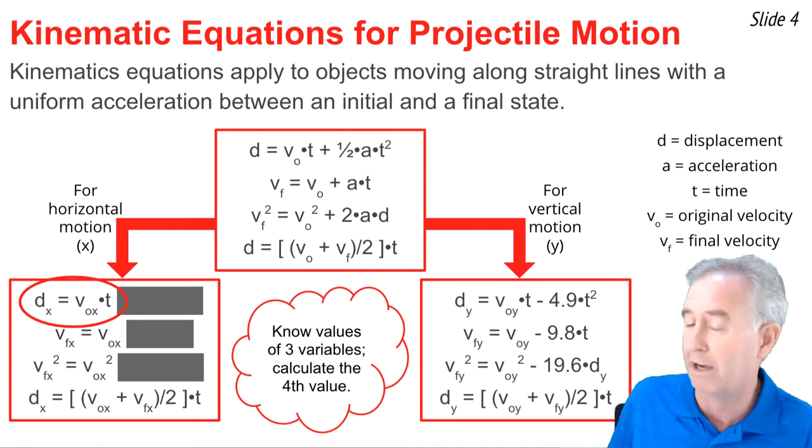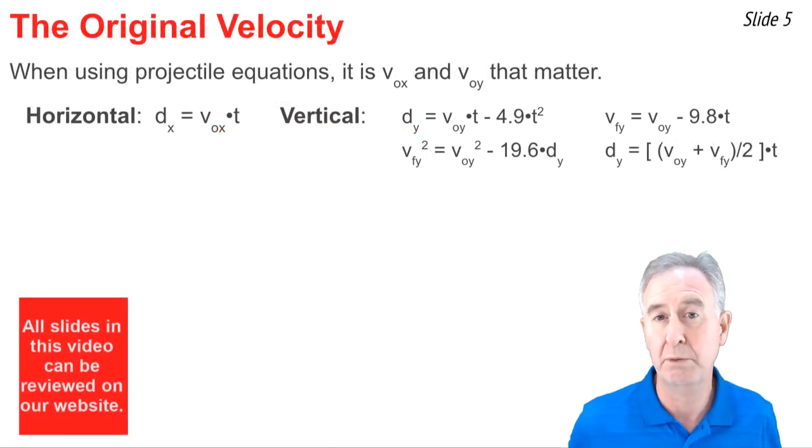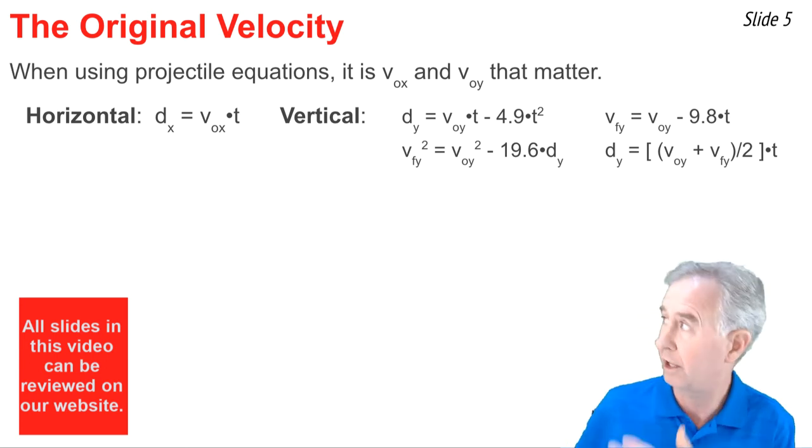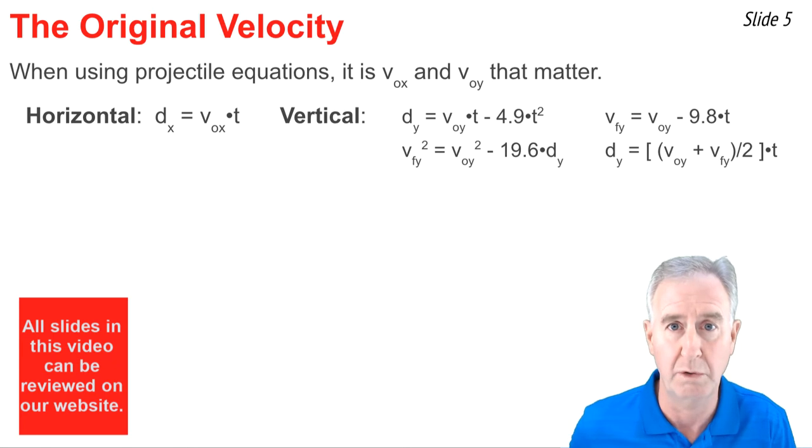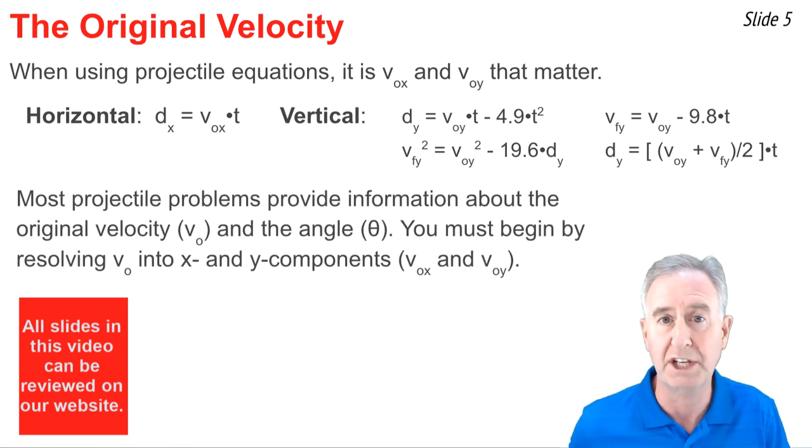It is important to recognize that our projectile equations have the variables Vox and Voy in them. What they don't have is the value V0. Oftentimes in the physics problem, you'll get the value of the original velocity and the angle at which the projectile is launched.